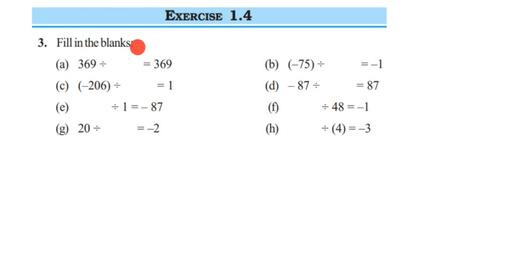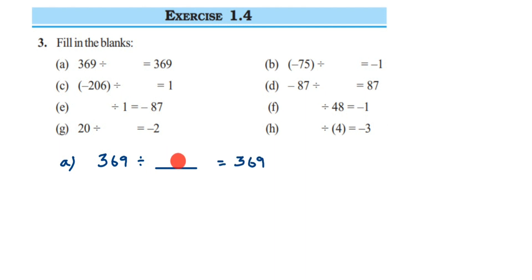In the first one, we have 369 divided by blank equals 369. We need to find what to divide by to get the same number. We know that whenever we divide any number by 1, we get the same number. Here 369 is positive and the answer is also positive, so the blank is 1.